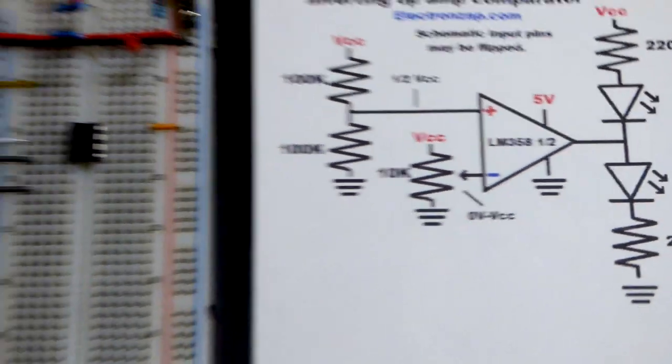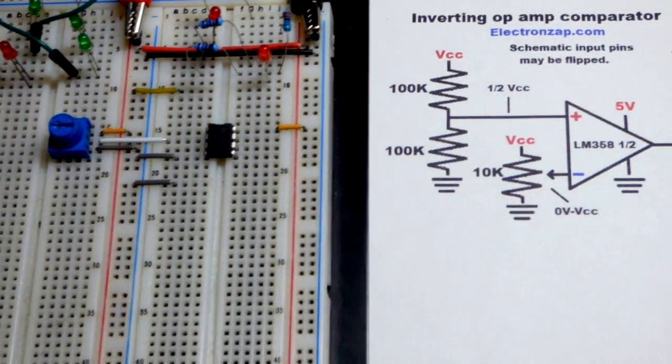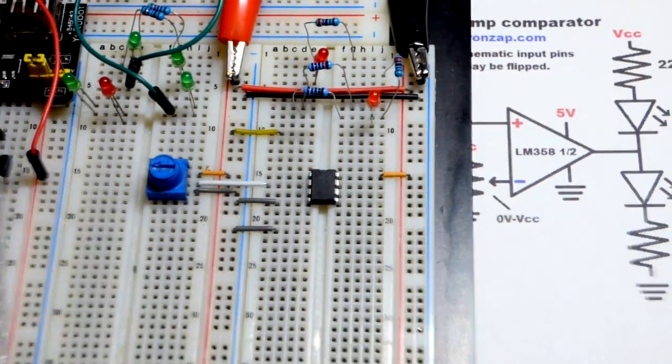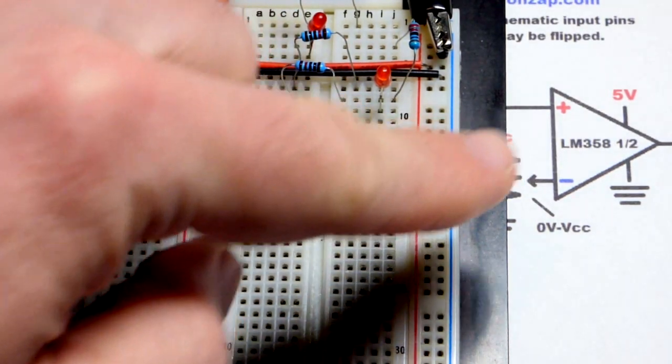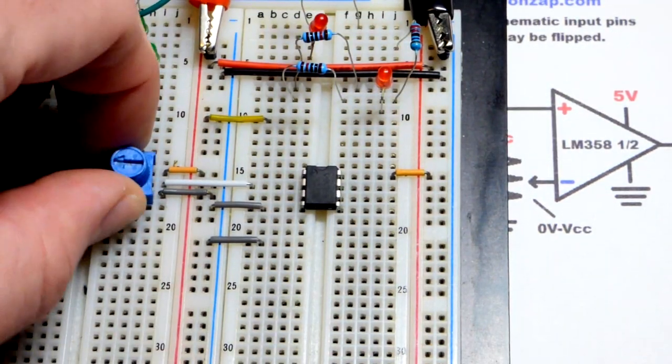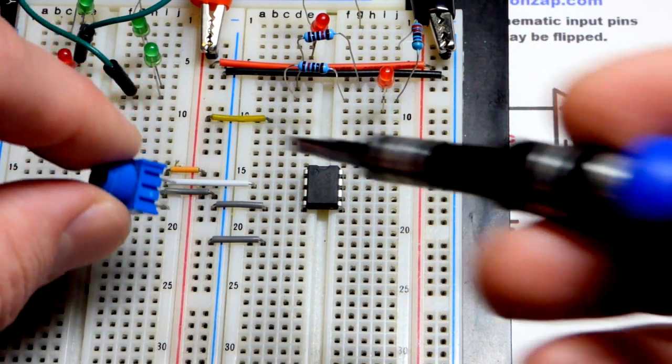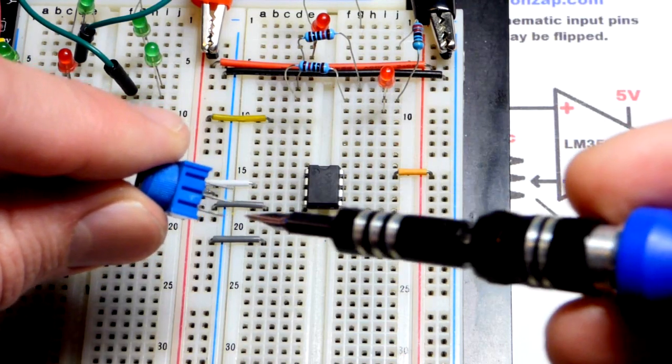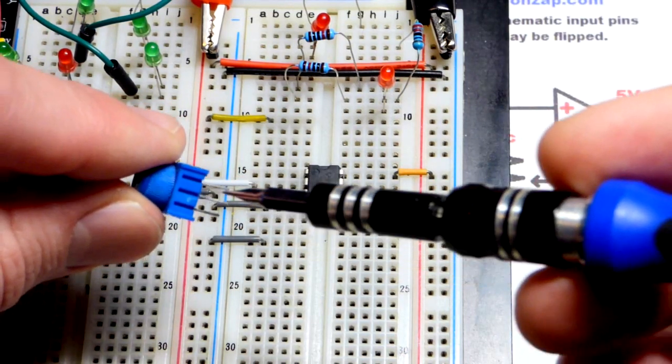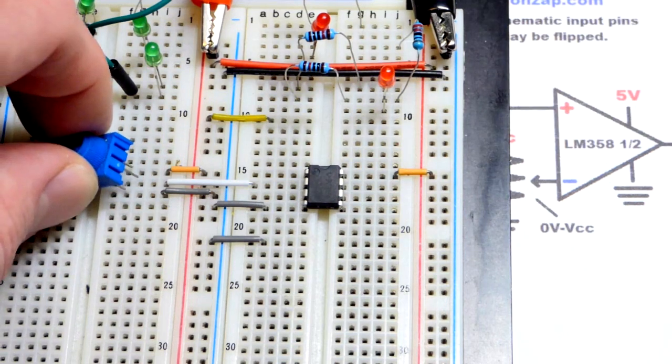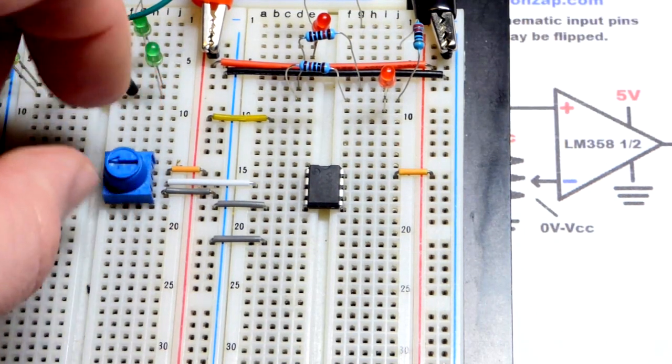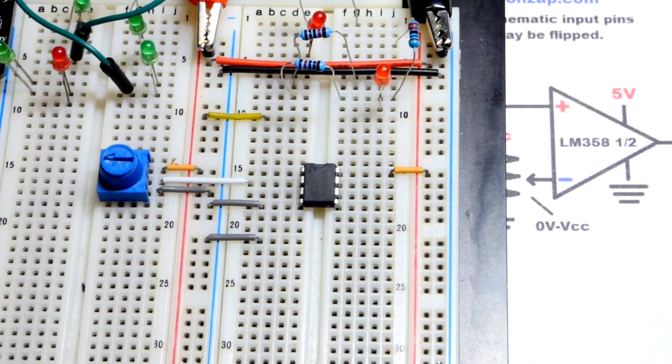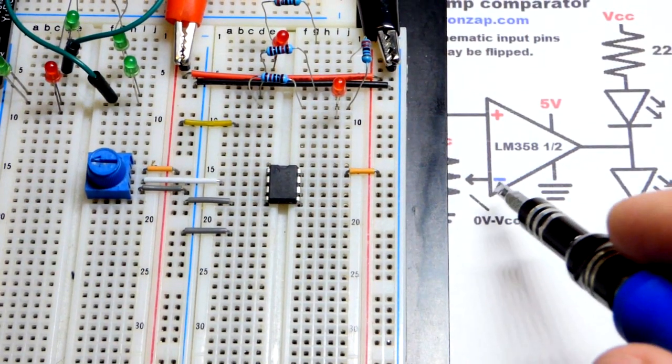I already wired up the trim pot. I'm using a 10 kilo-ohm trim pot. Exact value doesn't matter. This just looks at voltage, doesn't depend on current at these inputs. Lower value components will allow more wasted current. We've got the resistive element across the two ends and a wiper that slides across them making a voltage divider. That comes over to the second pin there, the inverting input.